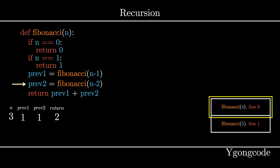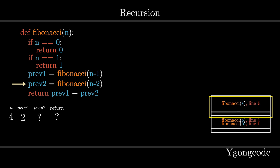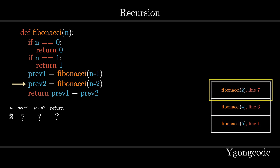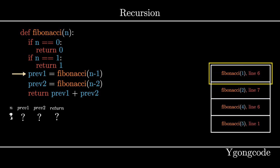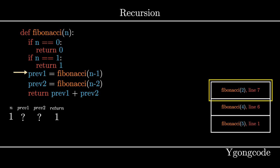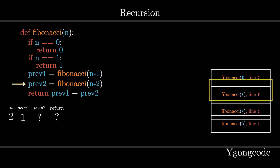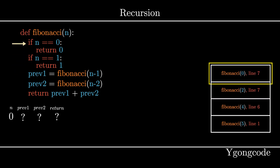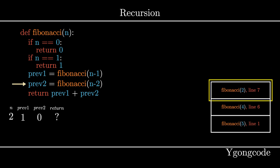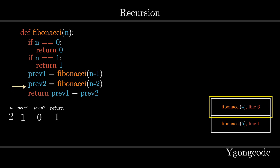At Fibonacci(4), we resume from line 6 and call Fibonacci(2), adding it to the stack. At Fibonacci(2), we call Fibonacci(1) and add it to the stack. At Fibonacci(1), we hit a base case — we return 1 and pop it off. Back at Fibonacci(2), we call Fibonacci(0) and add it to the stack. At Fibonacci(0), we hit a base case — we return 0 and pop it off. Back at Fibonacci(2), we sum up prev1 and prev2 and return the result. Back at Fibonacci(4), we sum up prev1 and prev2 and return the result.